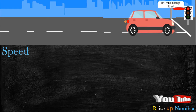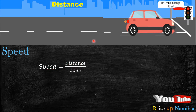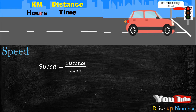How do we calculate speed? We calculate speed using this formula. There are two important things we need: number one, distance, and number two, time. When your distance is in kilometers, your time should be in hours. When your distance is in meters, your time should be in seconds.